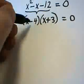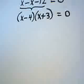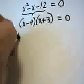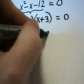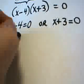If two factors are multiplied together to give me 0, either the first factor is equal to 0 or the second factor is equal to 0. In the first case, x = 4. And in the second case, x = -3.